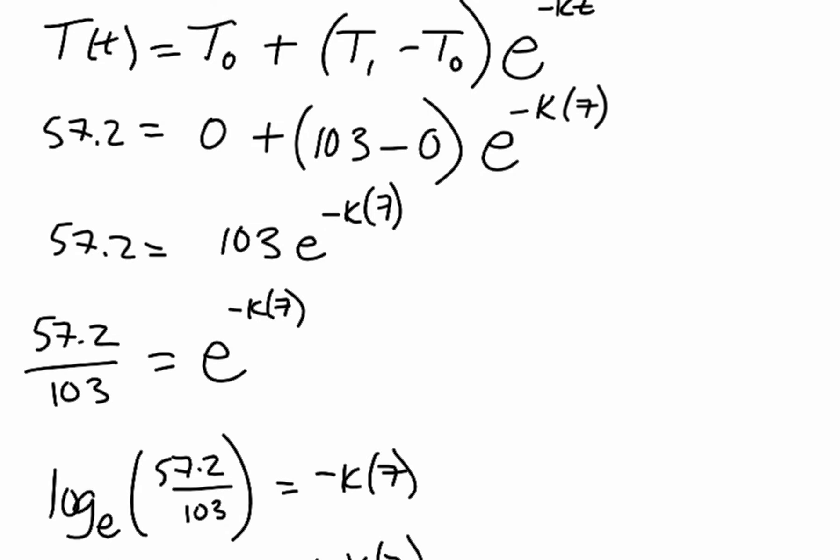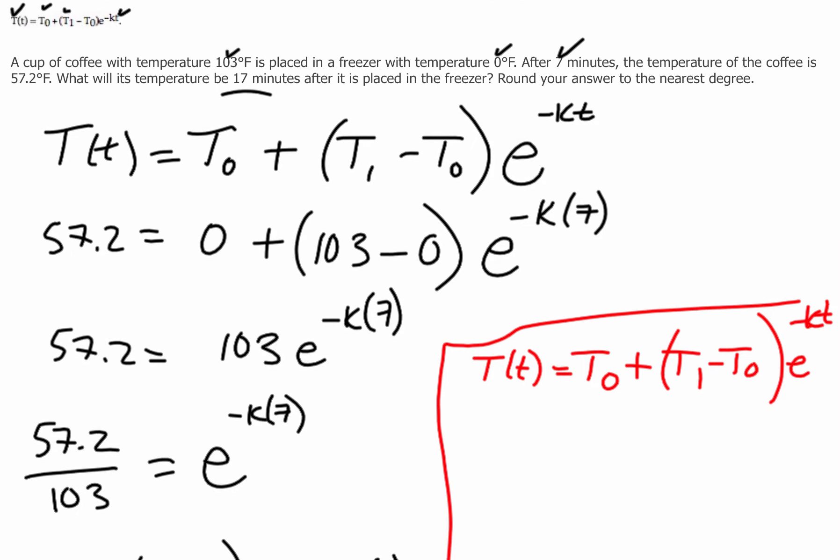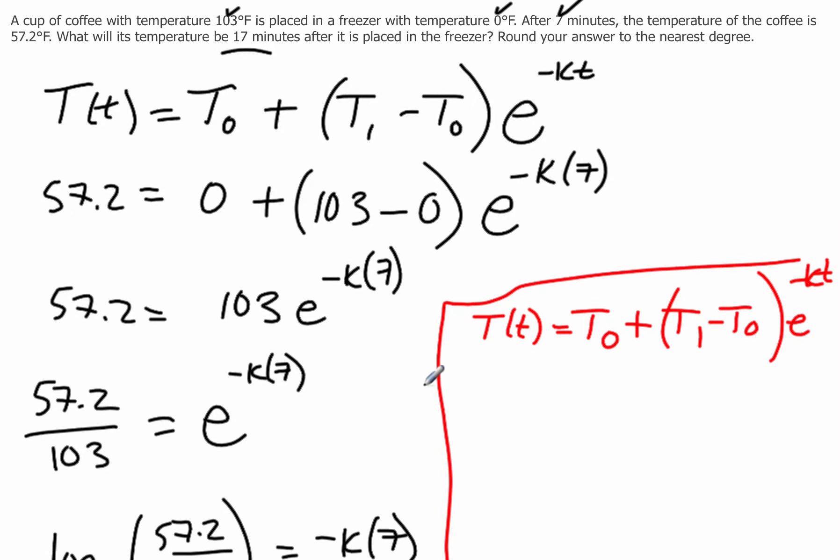So I'll use my same formula. I'm going to do it over here on the side in a different color, just so I've got some of my data close. So temperature after a time is equal to T₀ plus T1 minus the surroundings e to the minus k times t. So they're saying what will the temperature be after 17 minutes, so they're looking for this number.